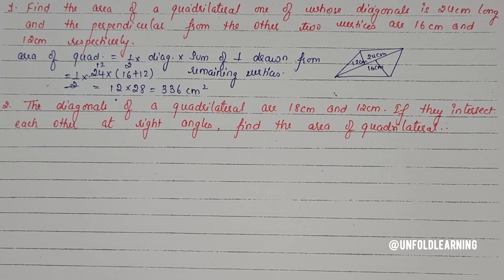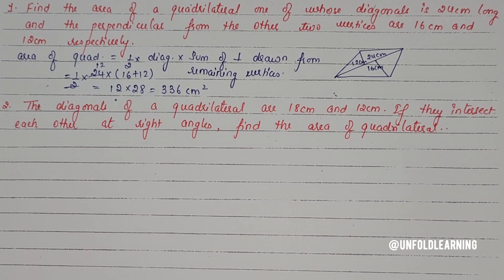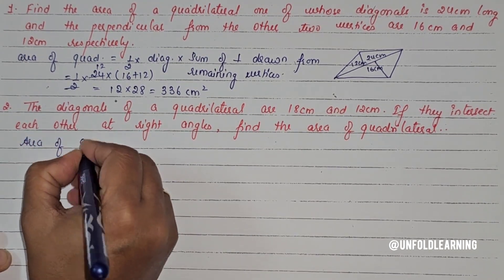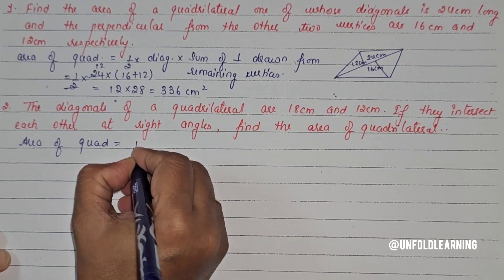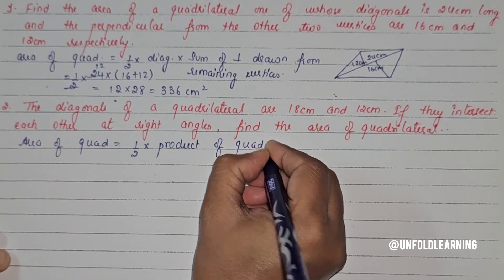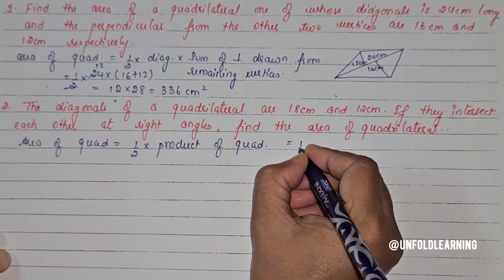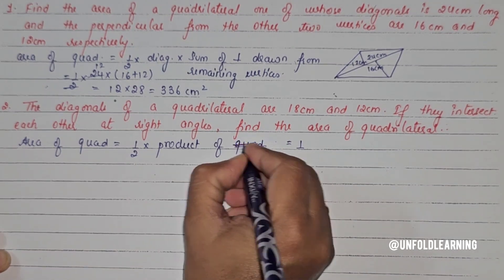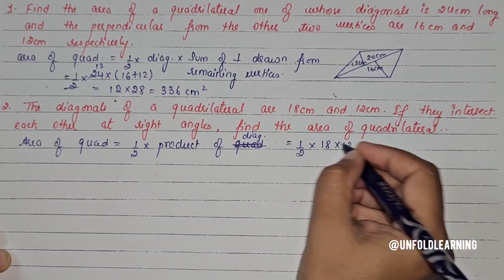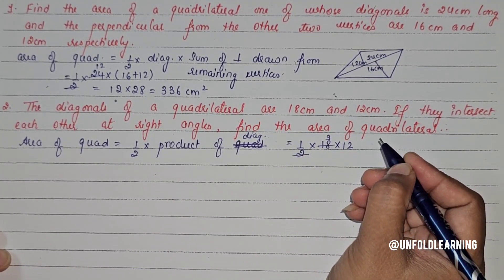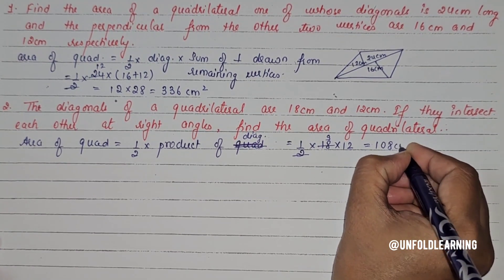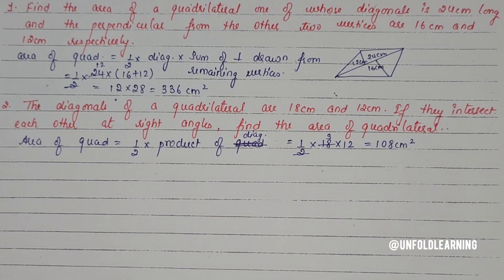Question 2: The diagonals of a quadrilateral intersect each other at right angles. Find the area of the quadrilateral. Area = 1/2 × product of diagonals = 1/2 × 18 × 12 = 108 cm².